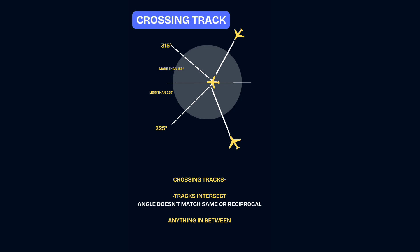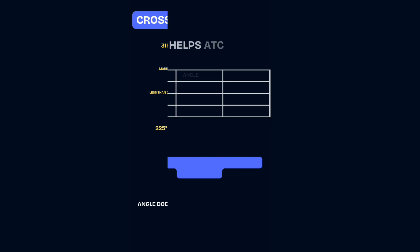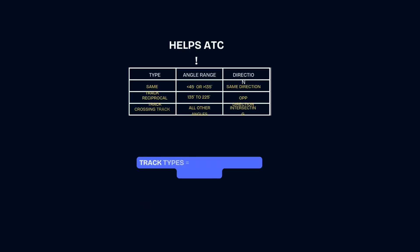Same, reciprocal, or crossing — the type of track helps ATC apply the correct time separation, keeping skies safe and orderly.